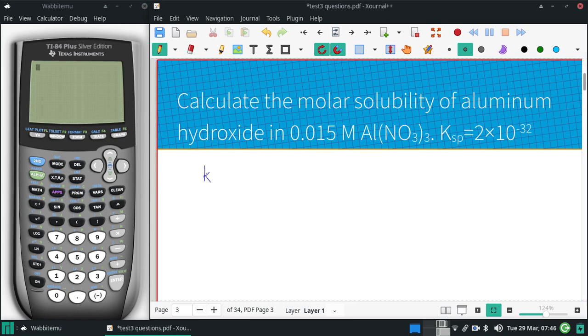So our Ksp for aluminum hydroxide will look something like, that is a 3 plus. OH is a minus 1, so there'd be 3 of those.